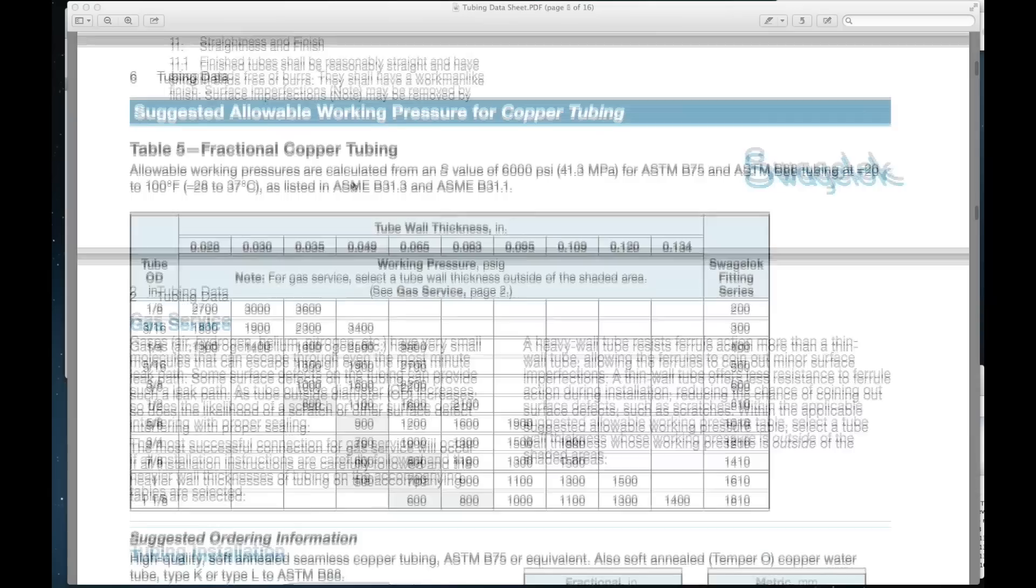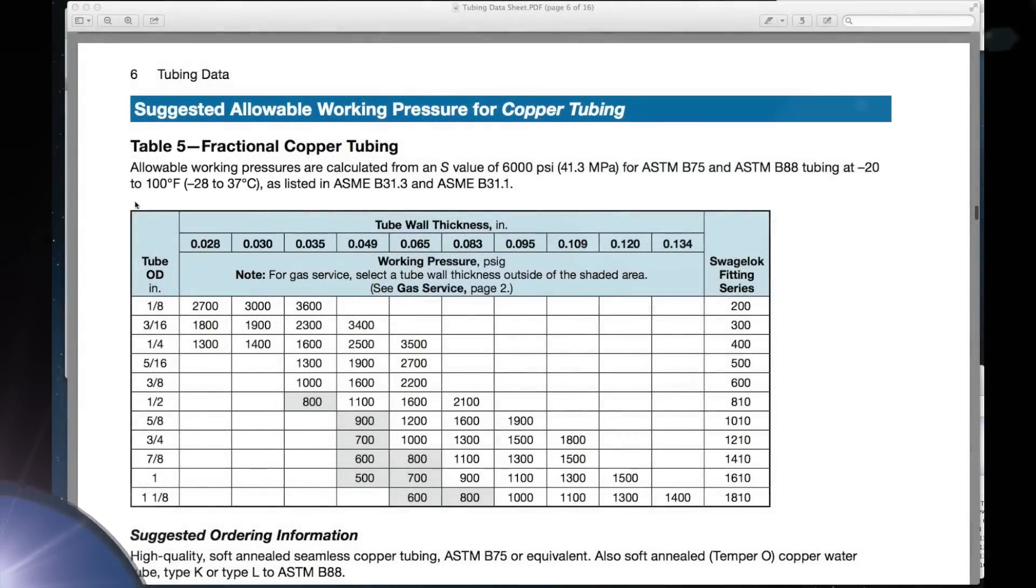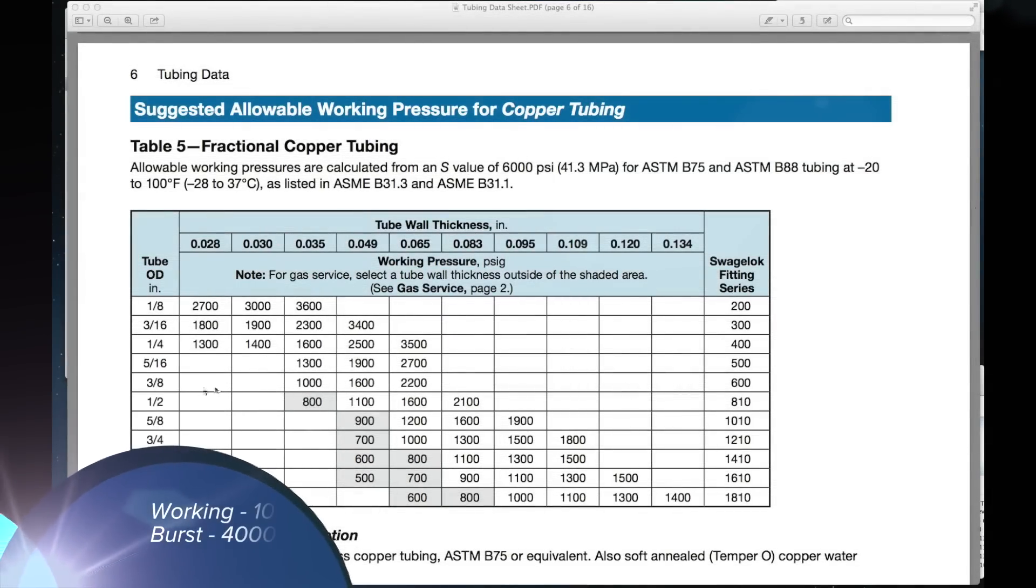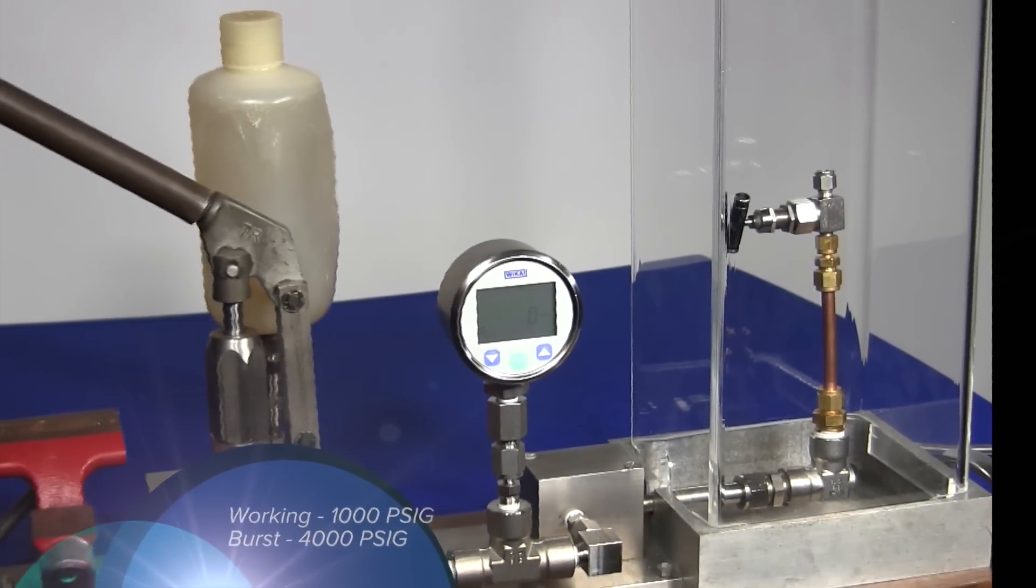At 70 degrees Fahrenheit, 3/8 inch soft annealed copper tubing with a .035 inch wall thickness has a suggested allowable working pressure of 1000 PSIG. Using the standard 4 to 1 safety factor, the minimum estimated burst pressure is 4000 PSIG.